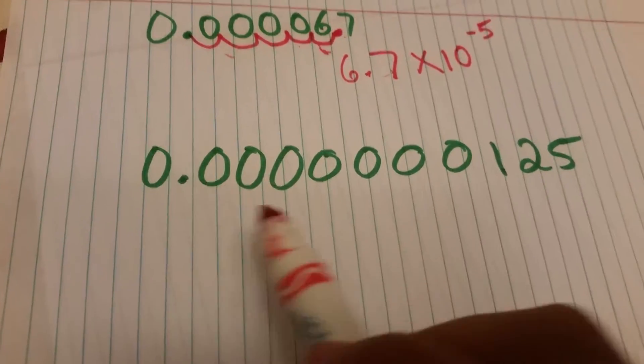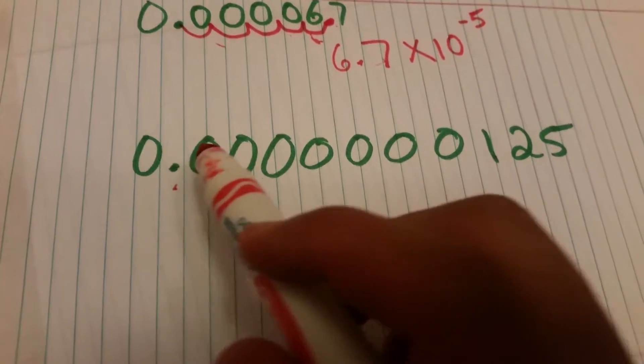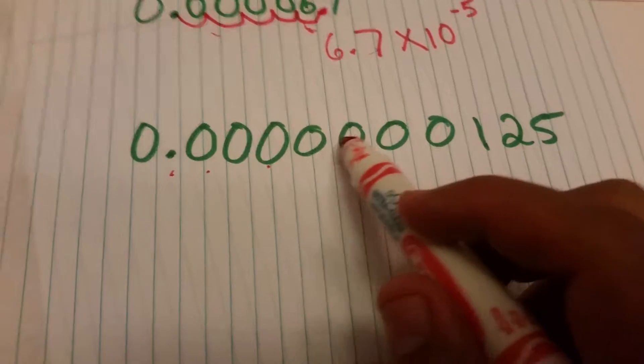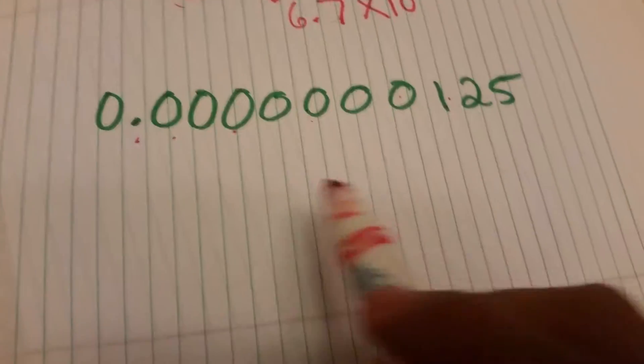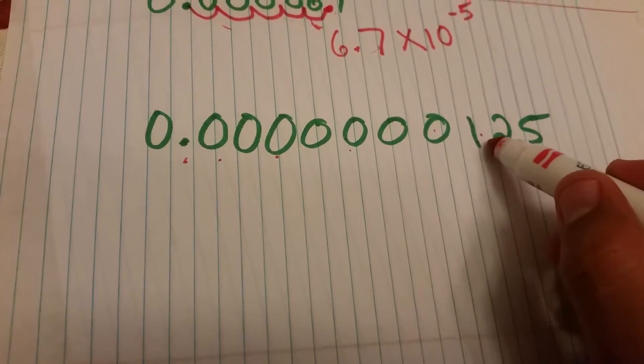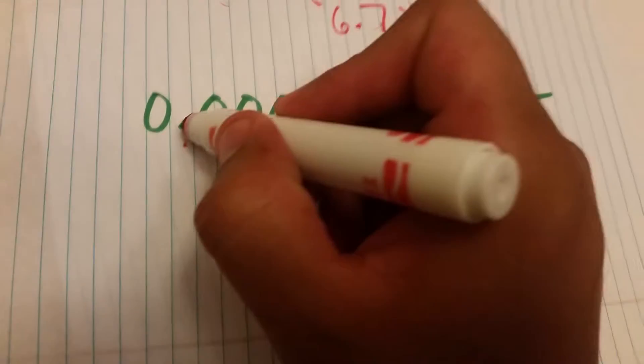Now in this one we got 0.00000000125, right? So what you're going to do is again you're going to count the decimals and you've got to go to the first number that's not a zero. So the first number that's not a zero is a one. You've got to go all the way until you pass it.